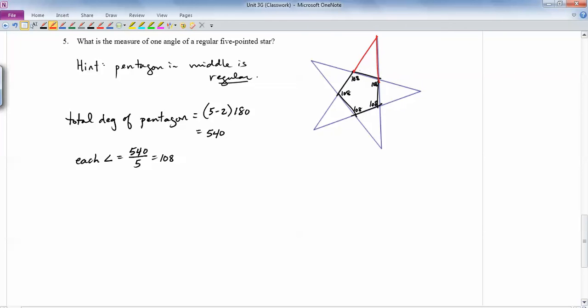Let's look at one of these triangles attached to it. Well, that's a straight angle. So this right here is going to be 180 minus 108, which is 72. So all these base angles in these triangles are going to be 72 degrees. This is the angle we're looking for. I'll call that x. So 72 plus 72 plus x is going to be 180 because it's a triangle. So that's 144 plus x equals 180. x ends up being 36. So one angle of the star, 36 degrees. I hope that helps a little bit. I'll see you soon.